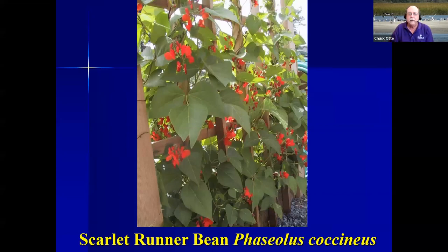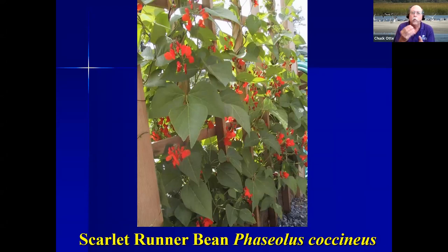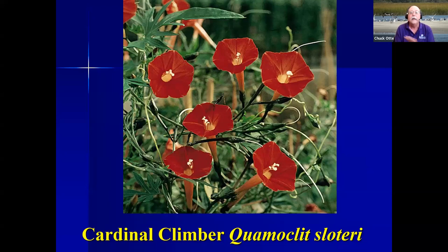Scarlet runner bean is an heirloom bean variety that allows you to garden vertically — put up a trellis. It's a dry bean and if you buy a package of hummingbird seed mix in spring, there's probably going to be some scarlet runner beans in it. Hummingbirds love the red color. Cardinal climber is not native, and my friends in southeastern Kansas sometimes have trouble with it volunteering from seed. It's an annual, very sensitive to frost, but it attracts a lot of hummingbirds and can go up a trellis, pole, or anywhere.